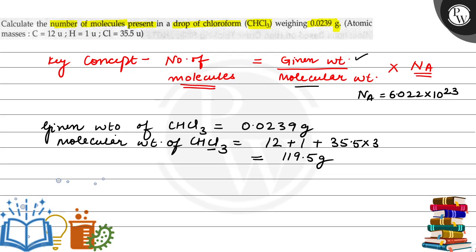We have molecular mass, we have given weight, Avogadro's number is constant. So we can put this in. By using the formula to find number of molecules of chloroform that is CHCl3 it is equals to 0.0239 divided